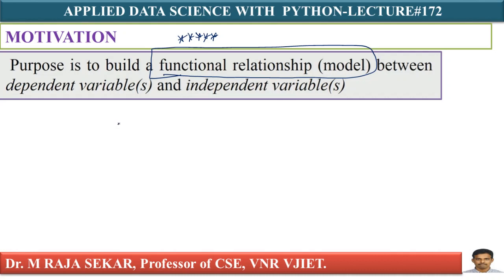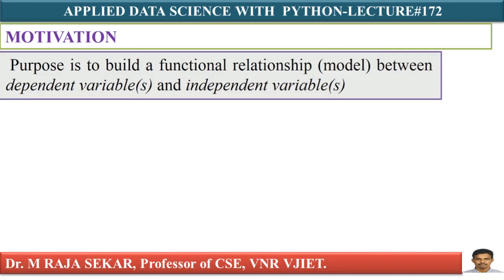That may be variables also. In the place of dependent variable, I can say dependent variables; in the place of independent variable, I can say independent variables. We will define these variables and how you choose them for the intended purpose a little later. Essentially, we are building a relationship between two variables — that relationship is also called a model. In the literature, it is known as building a regression model, or sometimes as identification of a model. The most popular term is regression.